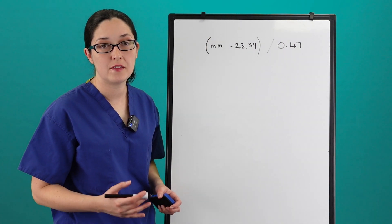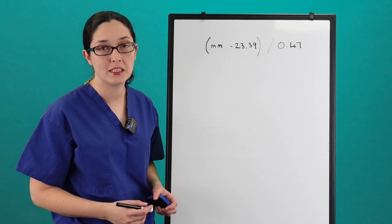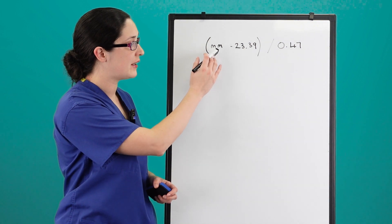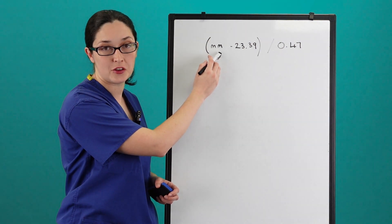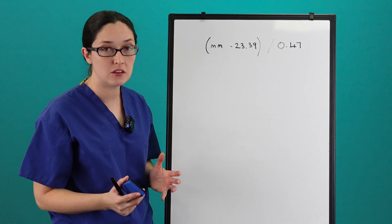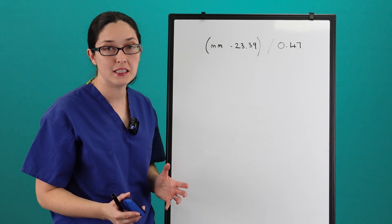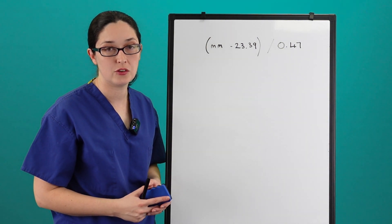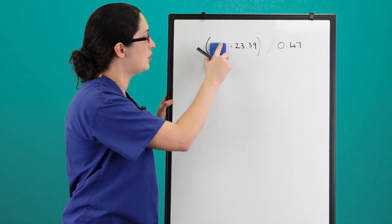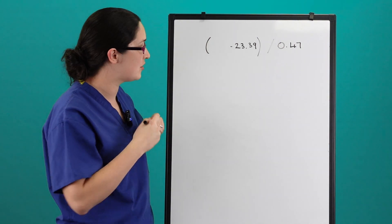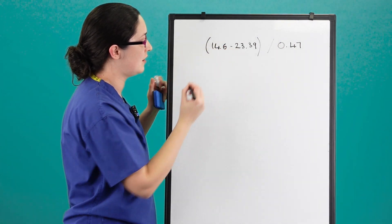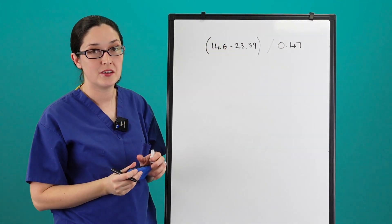You should always take the mean of all the measurements you have performed, and remember that for this calculation the value must be in millimetres. So in the example we just looked at, where we measured the head diameter at 1.46 centimetres, we enter this as 14.6 millimetres.